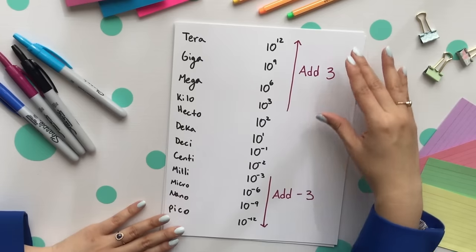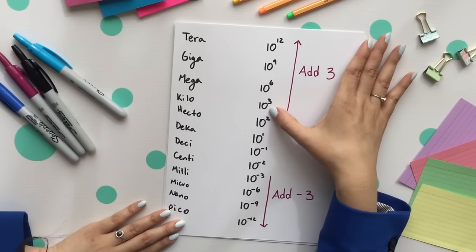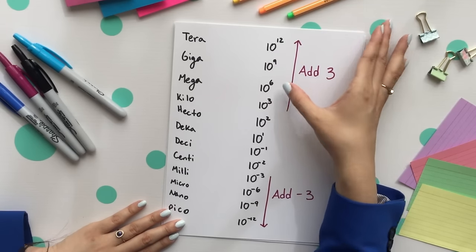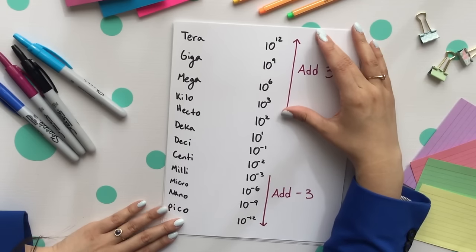For a more extended version of the metric system, notice that we can go ahead and just add by three. Leaving off at that kilo, that 10 to the third, by adding three it goes up every single time and that's how you can remember the extended version.